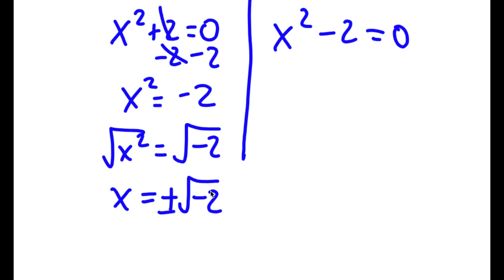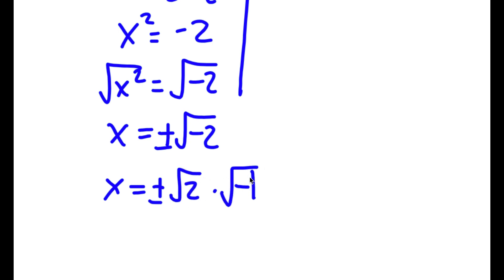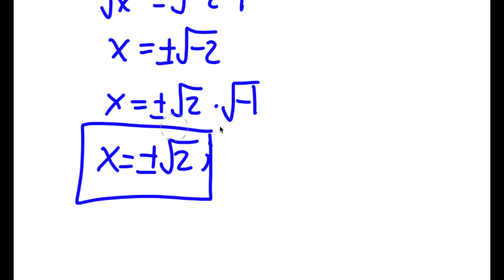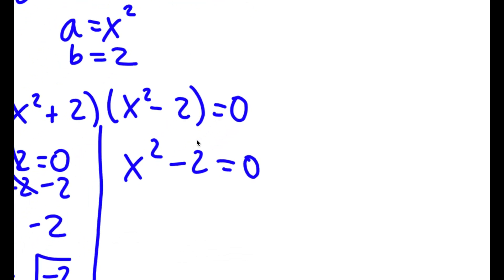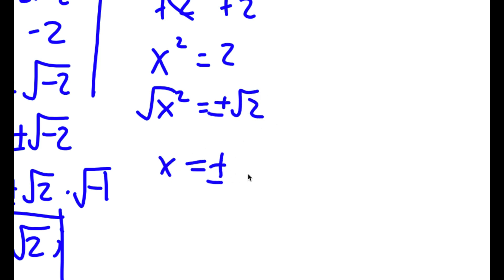Now for x squared minus 2 equals 0, I add 2 to both sides — these cancel out and I get x squared equals 2. Taking the square root on both sides gives x equals positive or negative square root of 2.